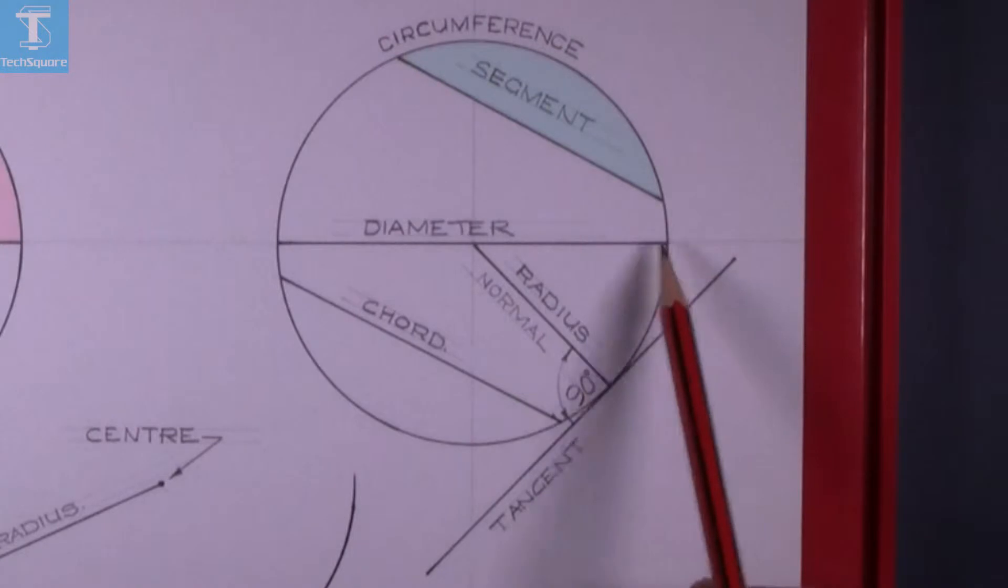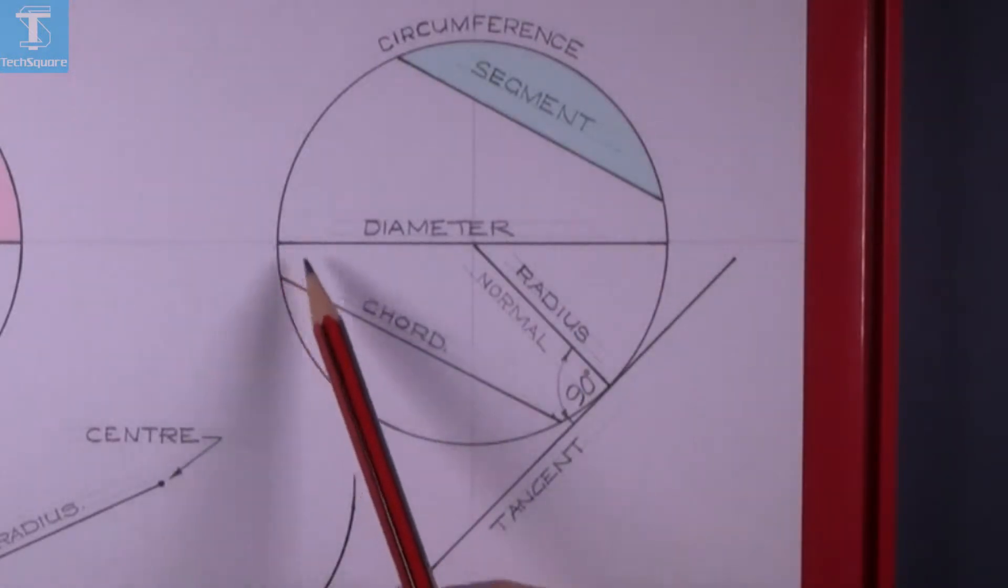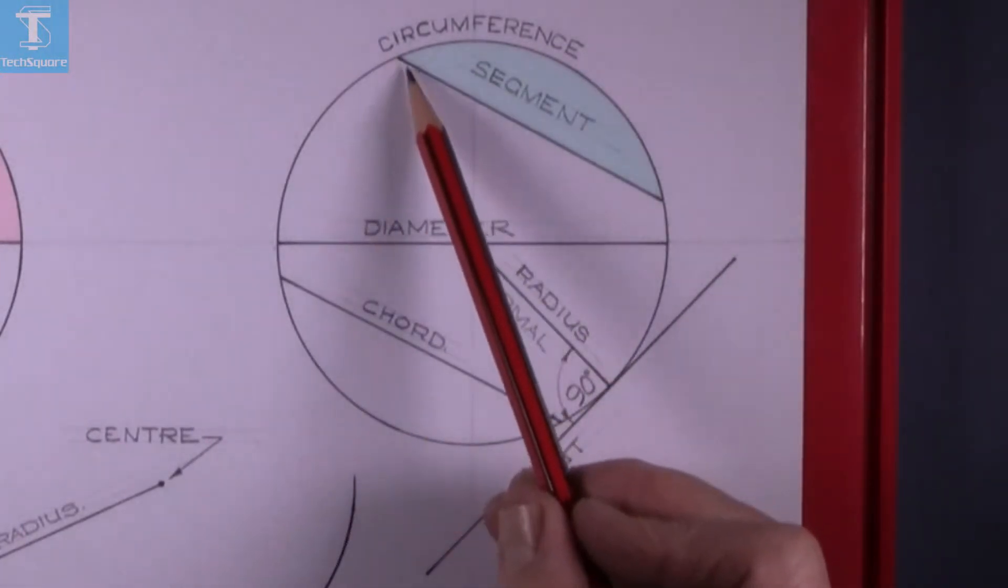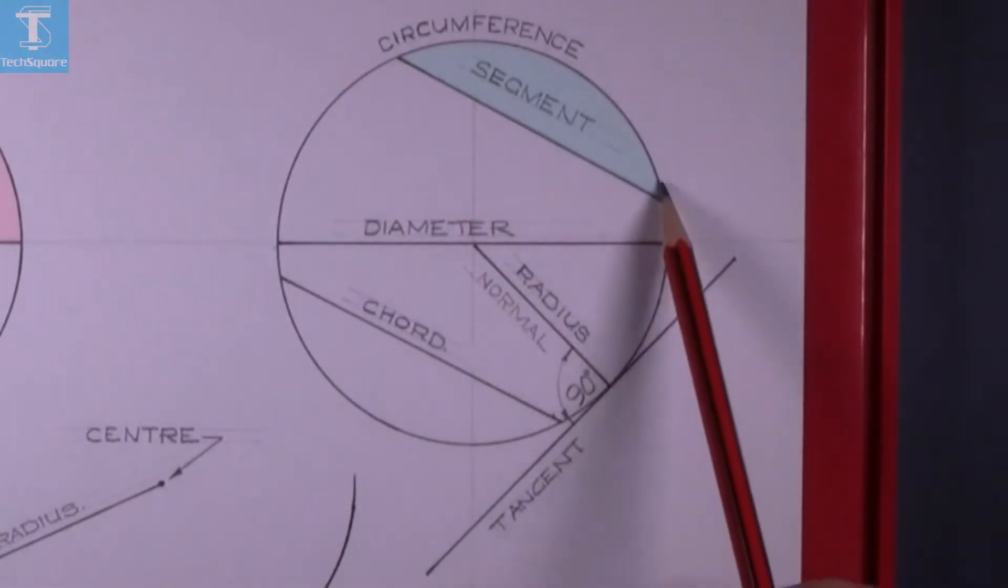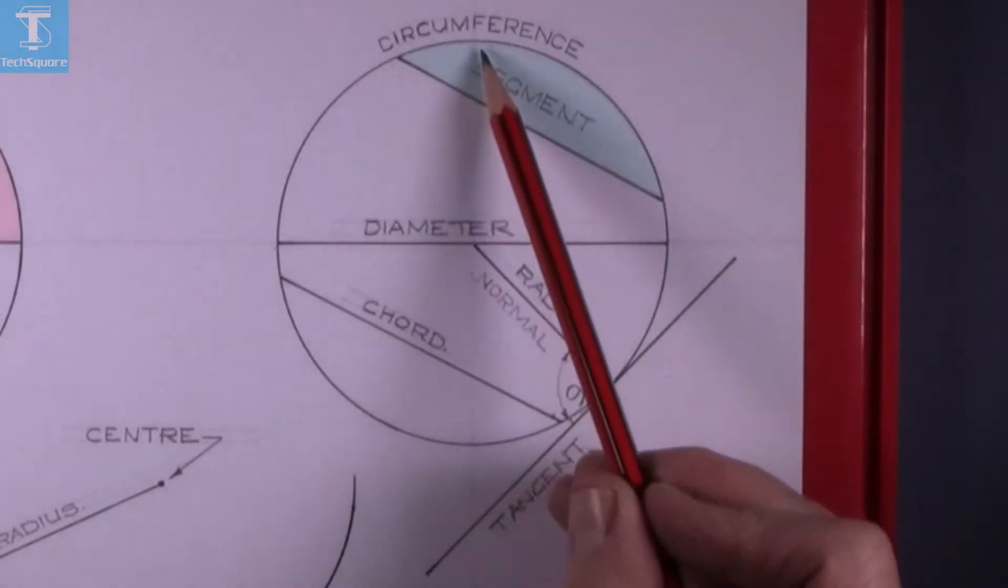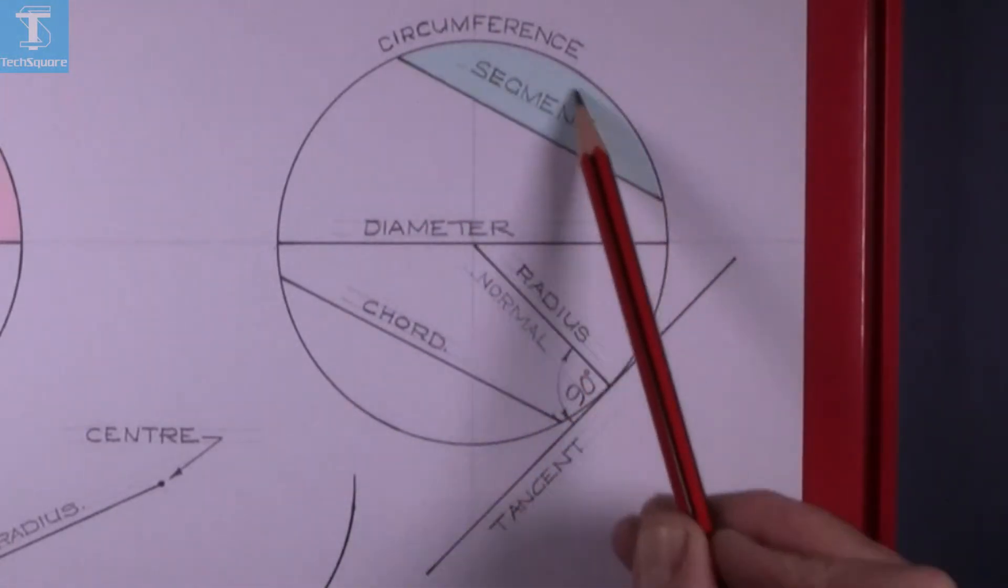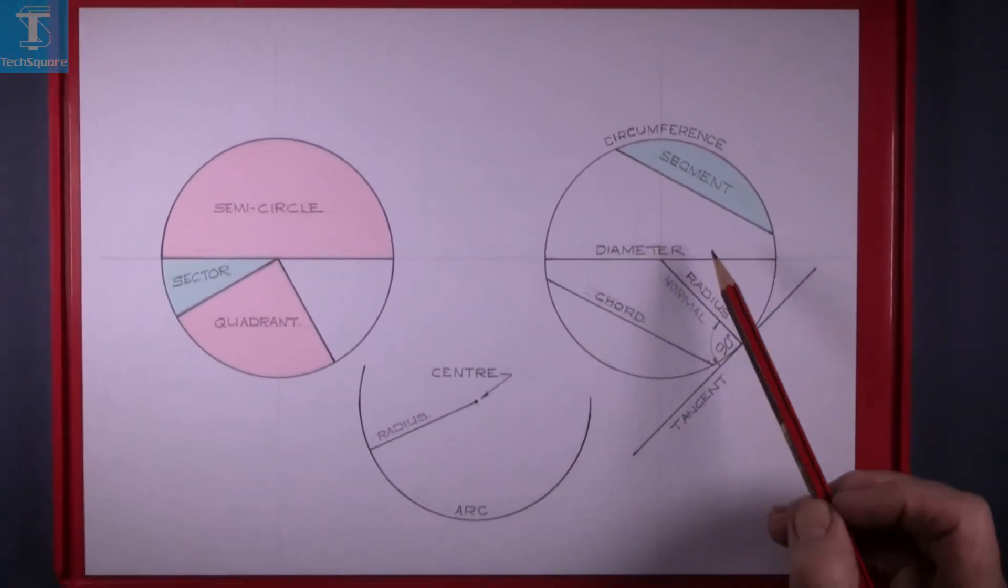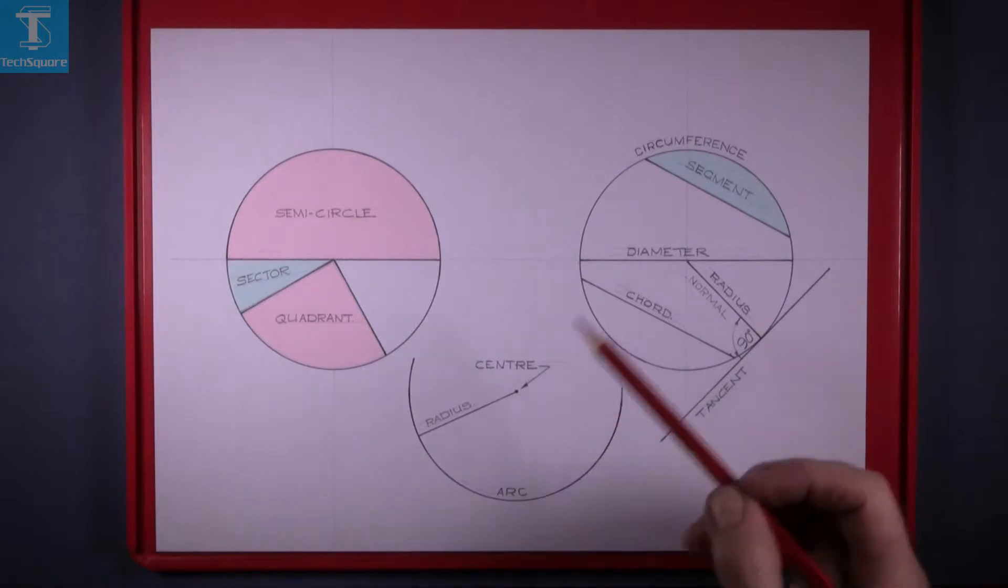Up here we have another cord drawn with part of the circumference, and that makes up a piece called a segment.